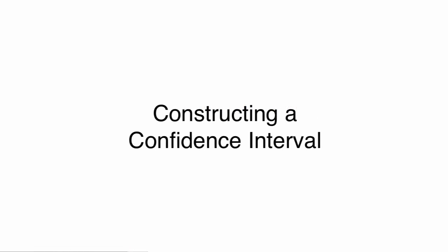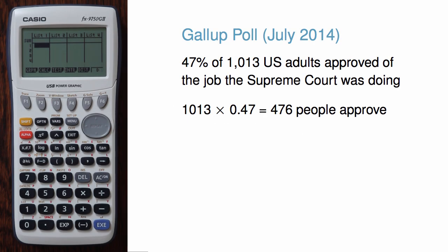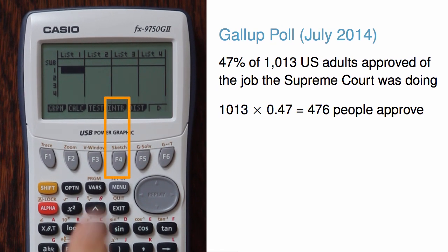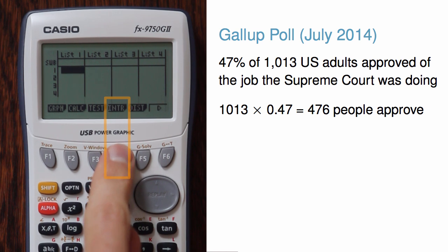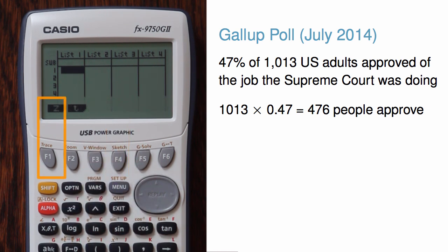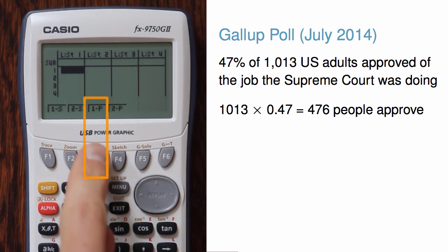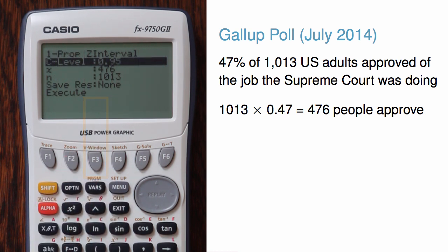Suppose we had been interested in constructing a 95% confidence interval for the data instead of the hypothesis test. To do so, go to enter for confidence interval, choose Z since we're working with proportions, and choose 1P for one-proportion confidence interval.